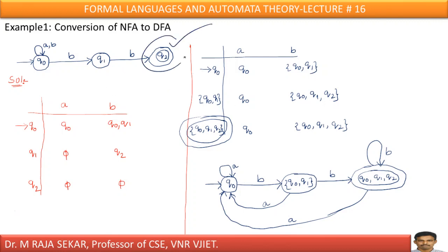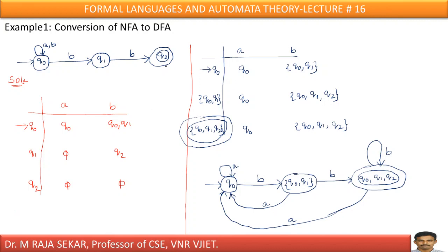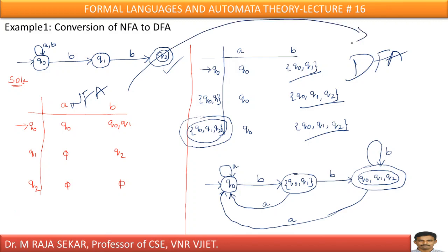Which one is the final state in the given question? Q2 is the final state. Therefore, wherever Q2 appears — in whichever set Q2 appears — treat them as final states. Here you don't have Q2, so it cannot be a final state. Q0Q1Q2 is a final state since Q2 is present in this set. From here onwards, each set is a single state. Therefore, this can be a DFA. Your NFA is converted into DFA.